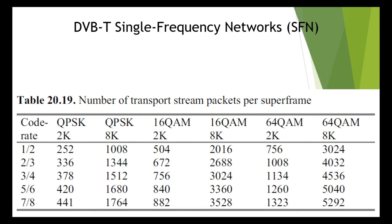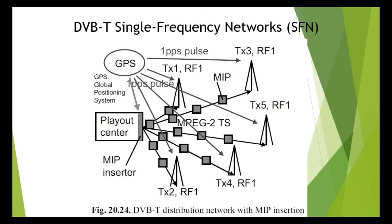To achieve this, packets with timestamps are inserted into the MPEG-2 transport stream at the play-out center. These are special transport stream packets configured similarly to an MPEG-2 PSI and SI table. For this purpose, the transport stream is divided into sections whose length is selected to be approximately half a second, because they must correspond to a certain integral number of transport stream packets fitting into a certain integral number of super frames. These sections are called mega frames.